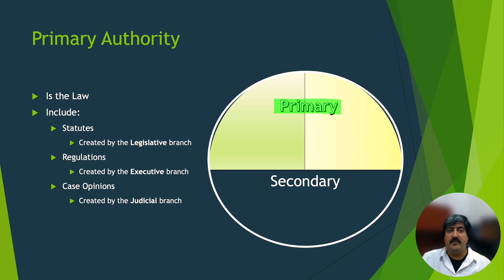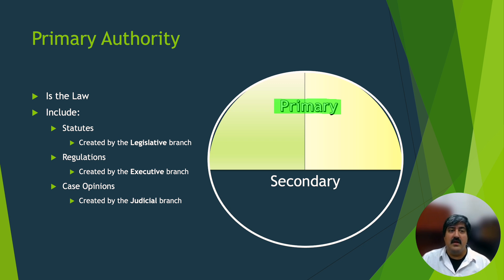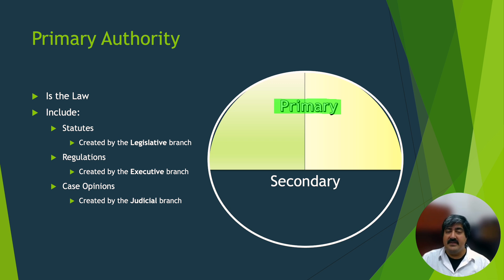Primary authority is what people in our lives mean when they use the term 'the law.' When your friends or family say 'the law says whatever,' they're usually talking about primary authority. These are statutes, which are created by the legislative branch; regulations, which are promulgated by the executive branch; and of course case opinions, which are drafted by the judicial branch.